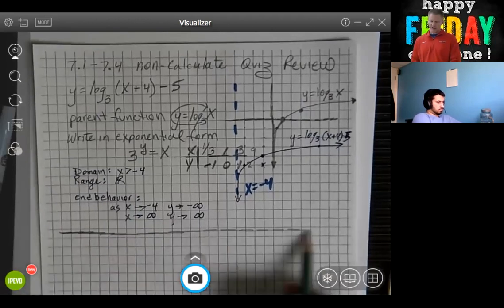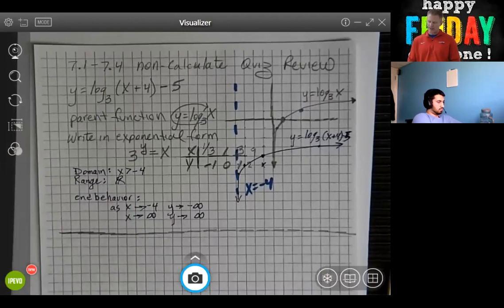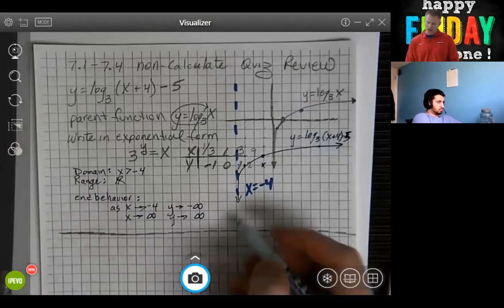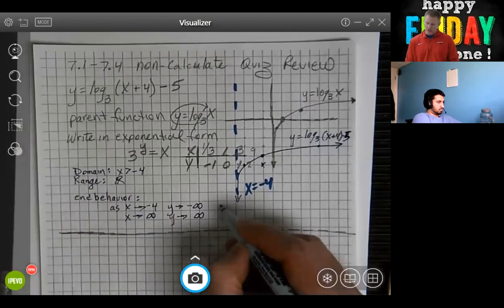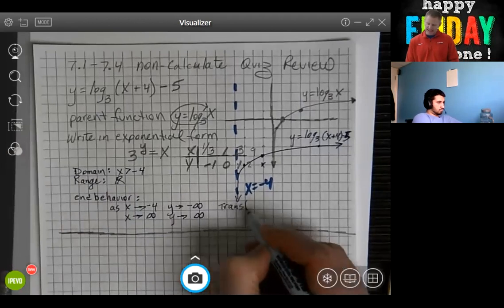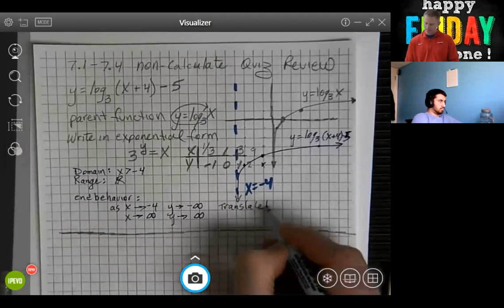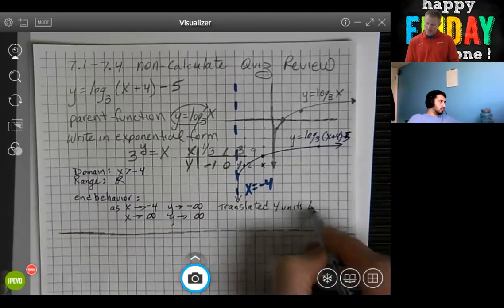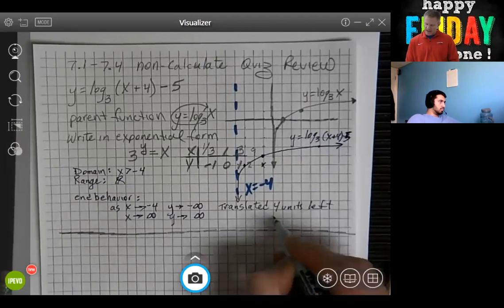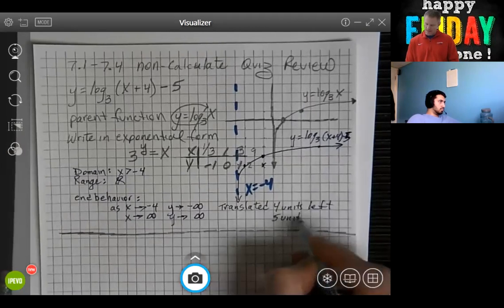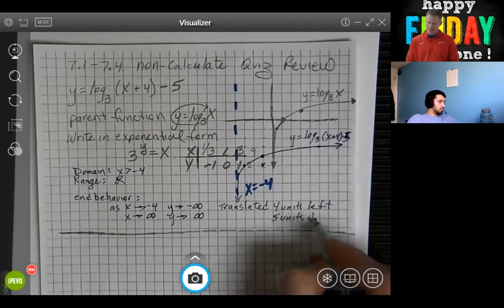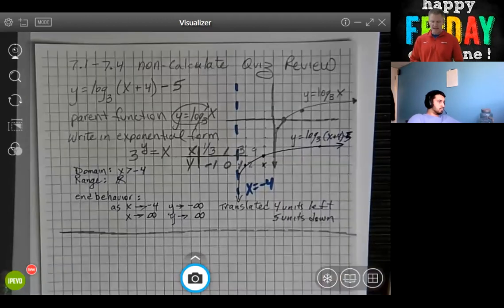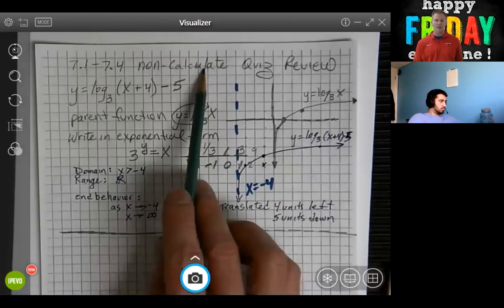In terms of a translation, or even transformations, we translated four units left, five units down. So that's an example of graphing a logarithmic graph that you may do for your non-calculator quiz.